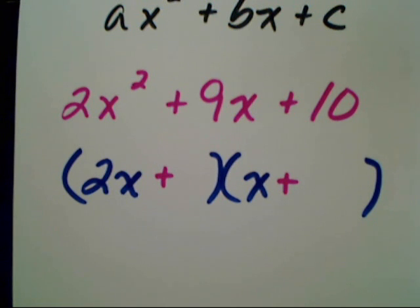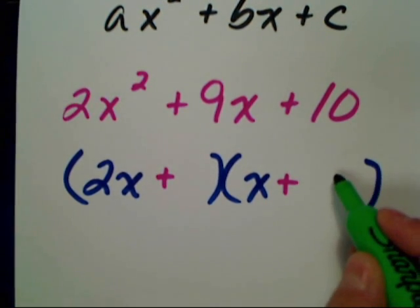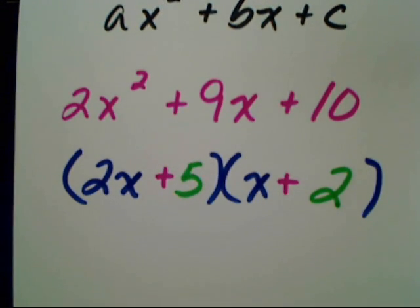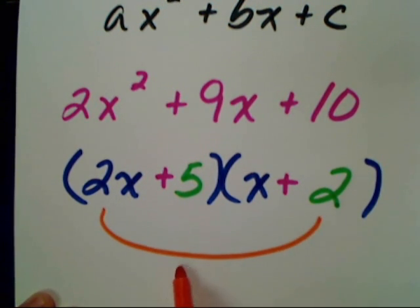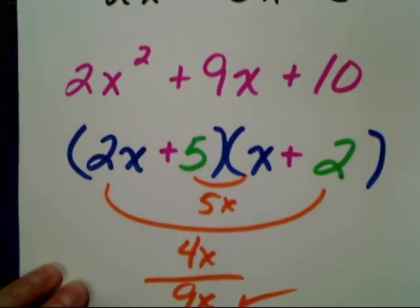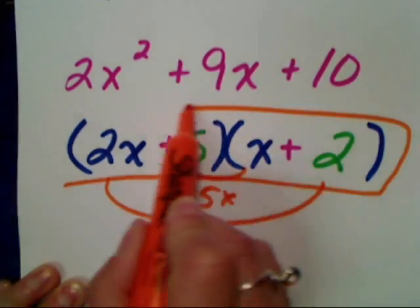When you have two choices of factors, 1 and 10, 2 and 5, most likely it's not going to be the 1 and whatever your number is. The exceptions to that is when 4 comes into play. 1 times 4 is used just as often, if not more, than 2 times 2. But in all other numbers, if you have 1 and a different pair, try the different pair first. So let's put the 2 here and the 5 here. Here I have 4x and here I have 5x, and 5x plus 4x is 9x. That's what I was looking for. So this is my factored form of this trinomial.